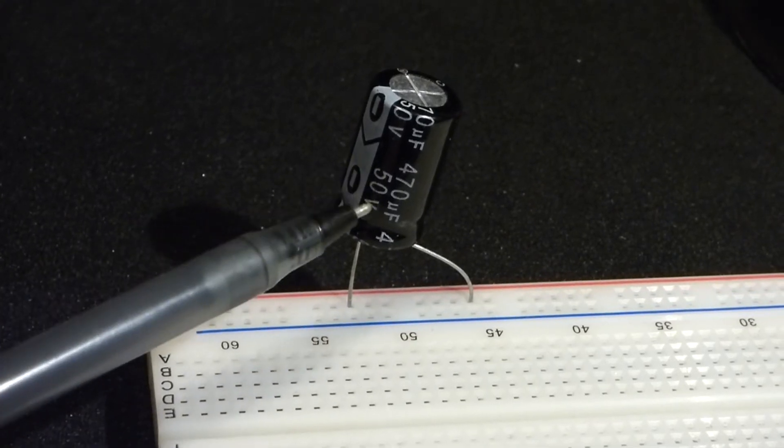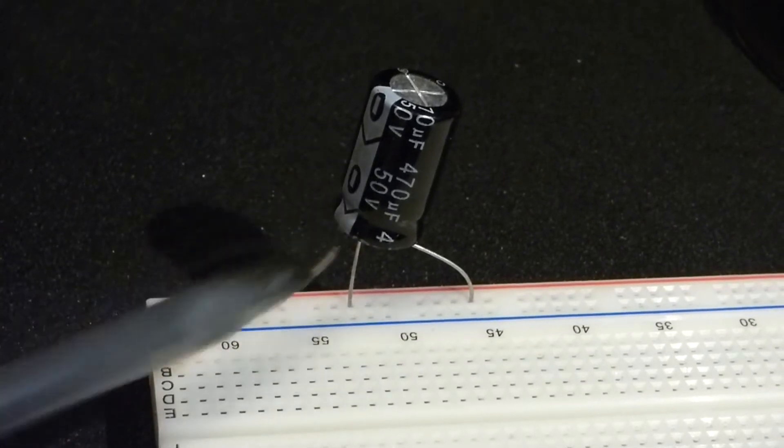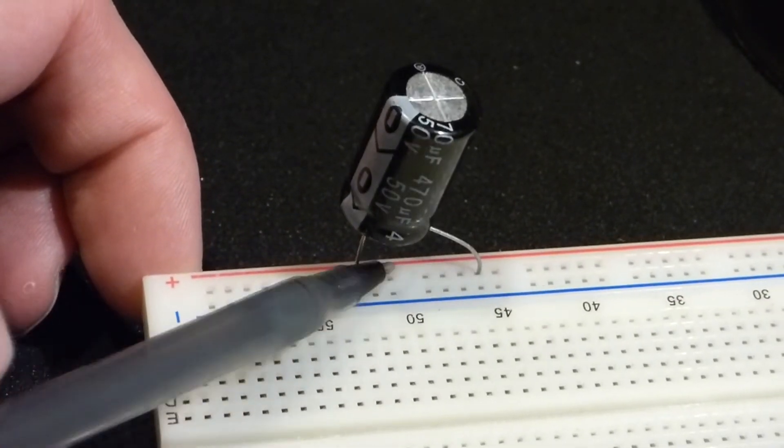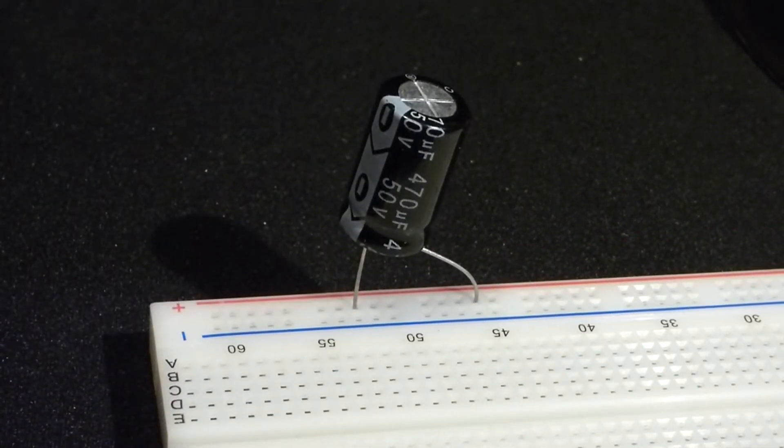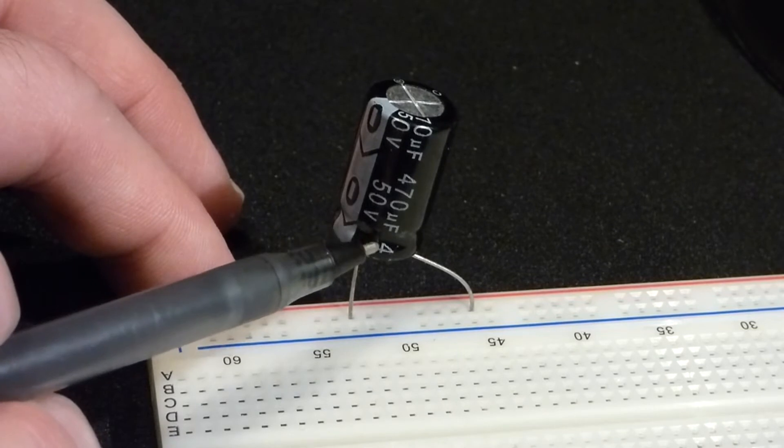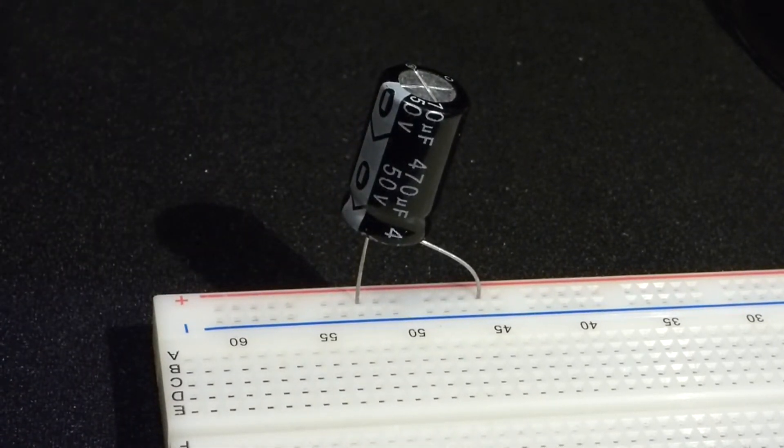I only used nine volts across my capacitor, so I wasn't worried about getting a shock. I just picked up the capacitor and set the leads into one rail of this breadboard to discharge it. This is a low value capacitor, only 470 microfarad, so I wasn't worried about the high currents and I wasn't worried about damaging the breadboard.